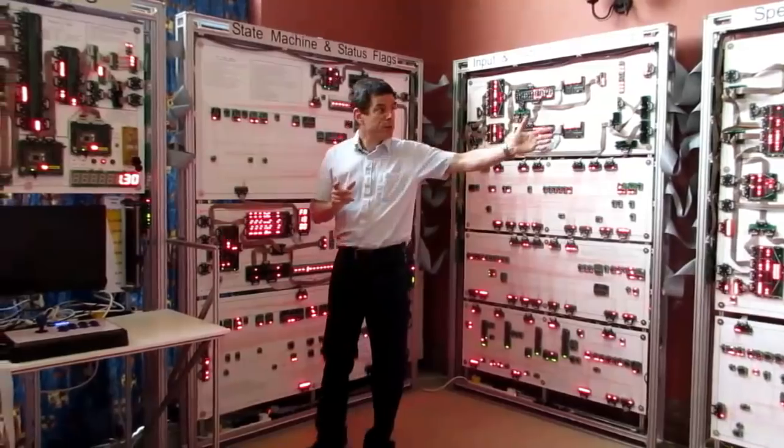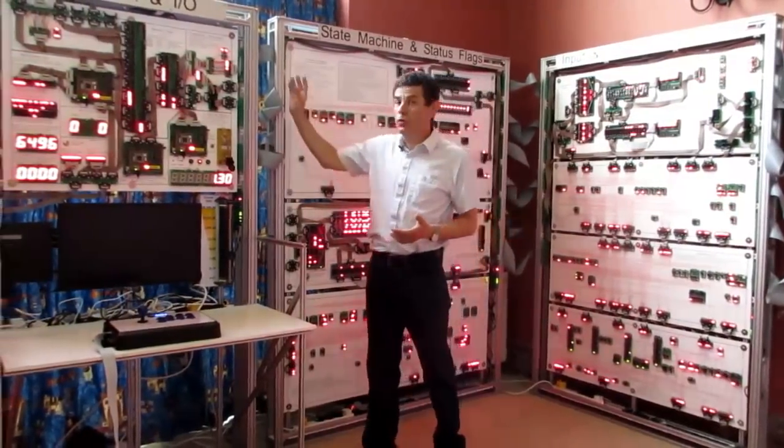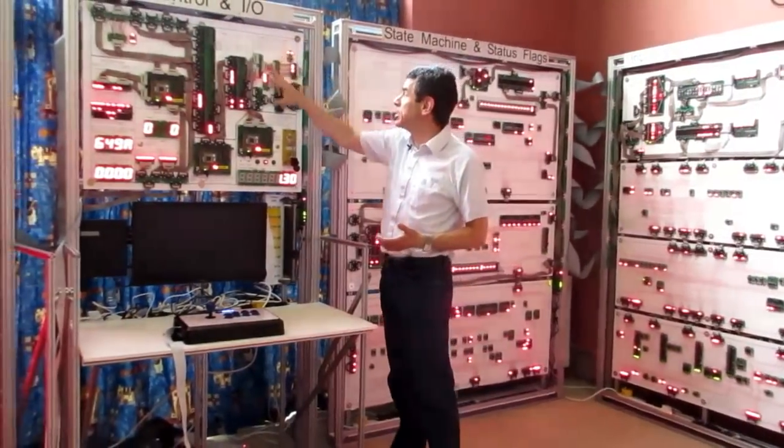So these five frames so far form the main body of the processor. Here we start to move into the outside world. So this region up here is an external interface.